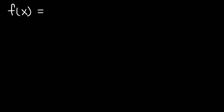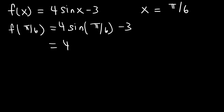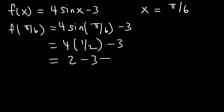Now let's work on one more example, but this time associated with a trig function. So let's say that f of x is 4 sine x minus 3, and we wish to write the equation of the tangent line when x is equal to pi over 6. Go ahead and work on that example. First, let's calculate y when x is pi over 6. So this is going to be 4 sine of pi over 6 minus 3. Now pi is equal to 180 degrees, so 180 divided by 6 is 30. Pi over 6 in radians is equivalent to 30 degrees. Sine 30 or sine pi over 6 is 1 half. 4 times 1 half is 2, and 2 minus 3 is negative 1. So y is negative 1 when x is pi over 6.